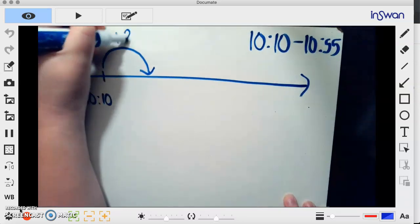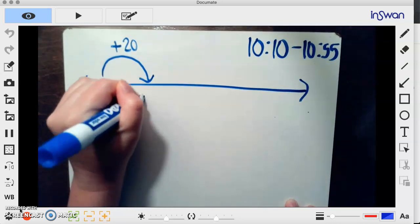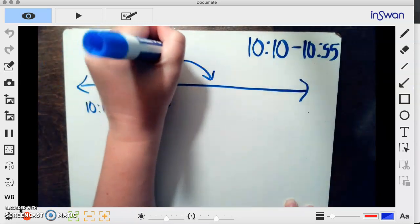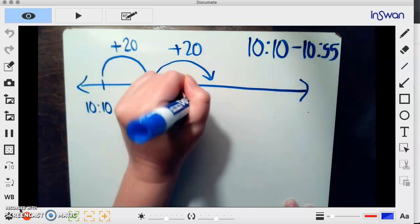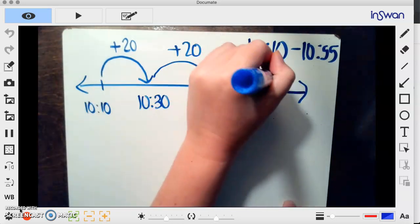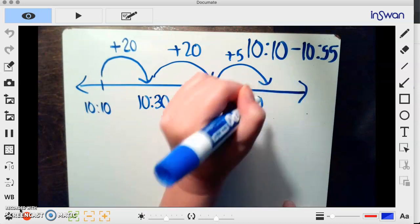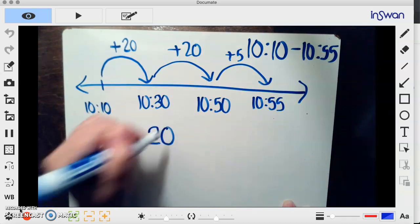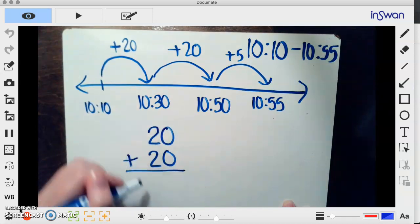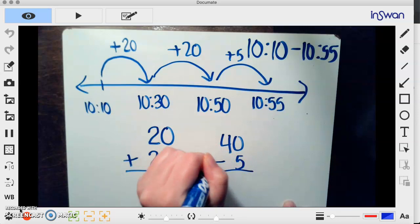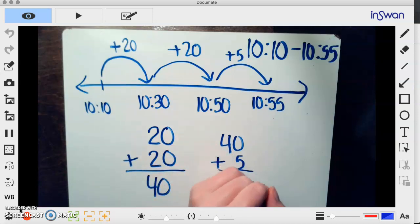So I'll do one jump for 20 minutes, which will bring me to 10:30. I'm going to do another jump for 20 minutes, which will bring me to 10:50. And one more jump for 5 minutes to bring me to 10:55. So now I need to add those all together: 20 and 20 gives me 40, 40 plus 5 gives me 45.